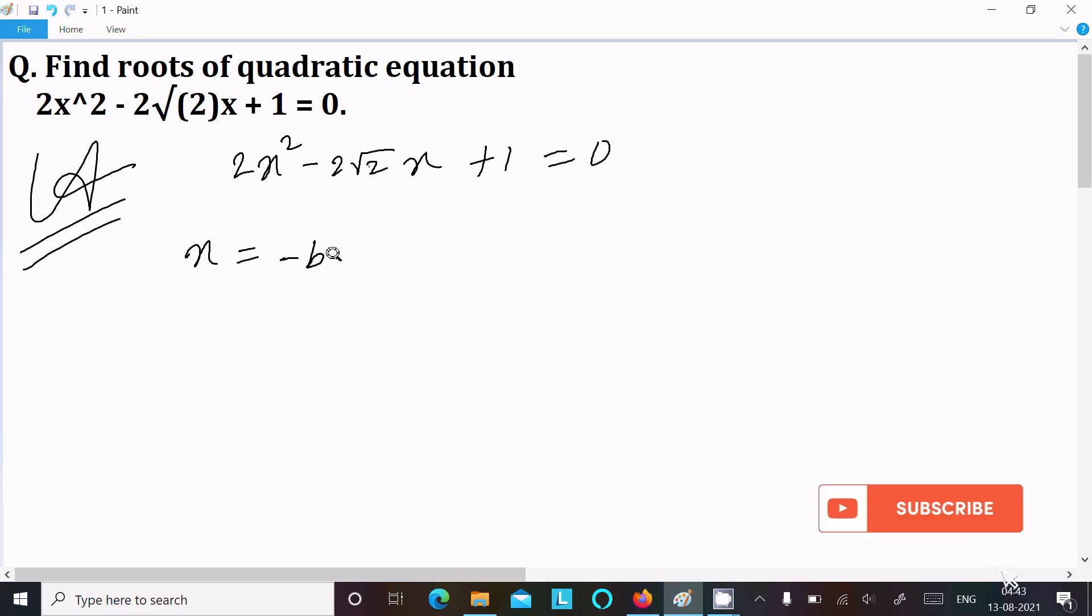Minus b plus minus under root b² - 4ac divided by 2a, so this is the formula.